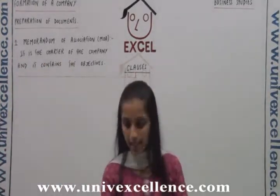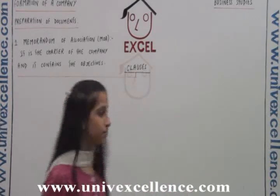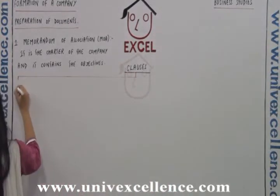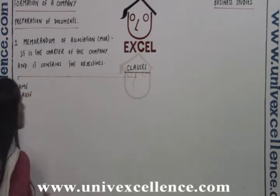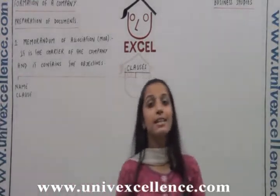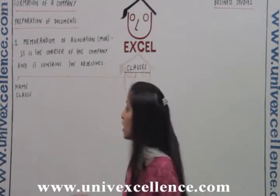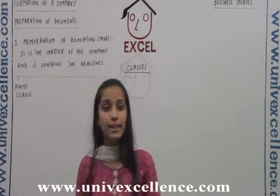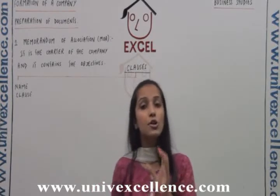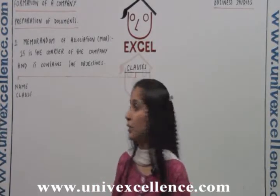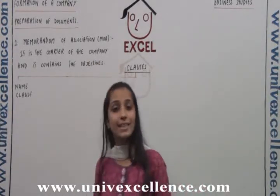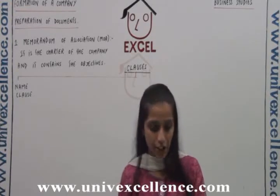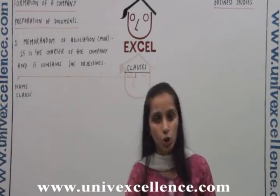The first clause is the name clause. As the name suggests, it contains the name of the company. The promoter has already done his function of getting the name approved. So now he has the name for the company. In this clause, the name of the company which has been approved by the registrar of companies is mentioned. This is the first and foremost clause.